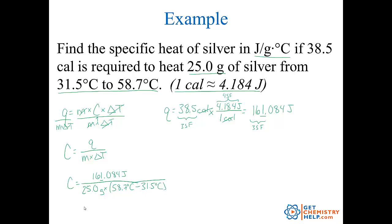So I punched that in my calculator. And let's see, how about our significant digits? Well, 161.084, but I marked this to remind myself, this should really only have three. 25.0, that should have three significant digits. 58.7 minus 31.5. Well, that's 27.2 degrees Celsius. And that also has three significant digits. So we've got three, three, and three. So the answer must have three.